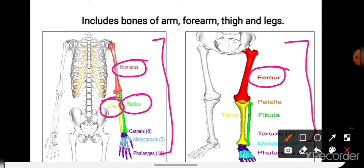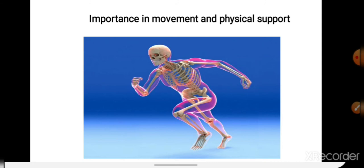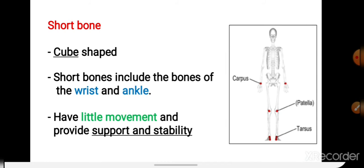If you see the leg, the upper portion is the thigh bone called femur. Below are two long bones: fibula and tibia. These are examples of long bones. Long bones are important for movement and physical support.